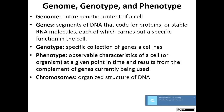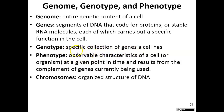A genotype is a specific collection of genes that a cell has — for example, the genes that code for hair would be part of a genotype. A phenotype is the characteristic that the genotype gives. For example, if you have a genotype with a dominant big B allele coding for dark hair and a little B for lighter hair, your phenotype would be dark hair.